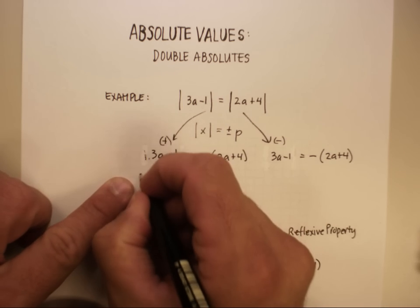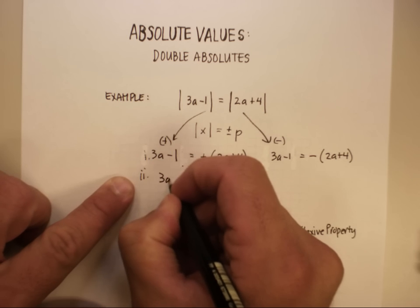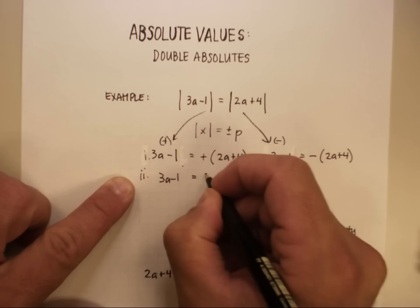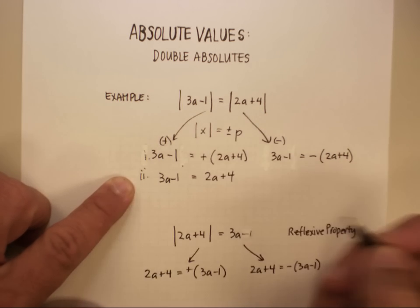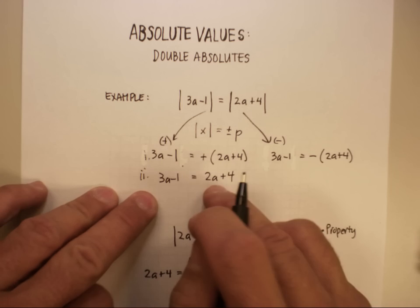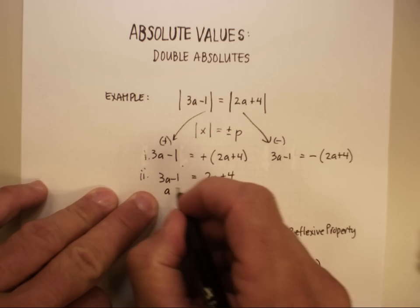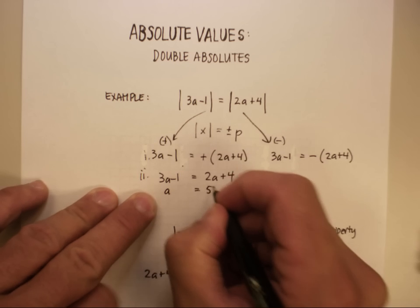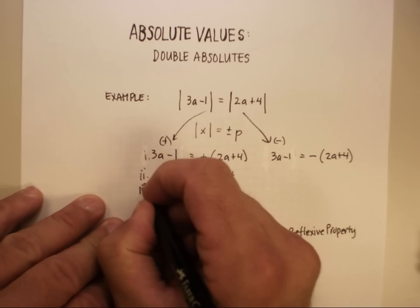I get step 2, 3a minus 1 is equal to 2a plus 4. Let's start solving that. Let's subtract 2a, let's add 1. That gives me a is equal to 5. Okay?